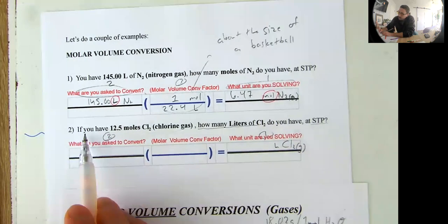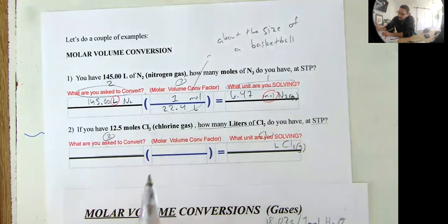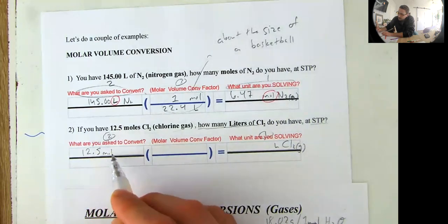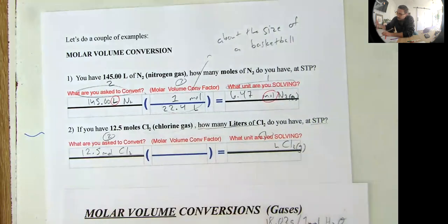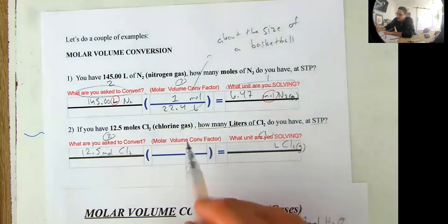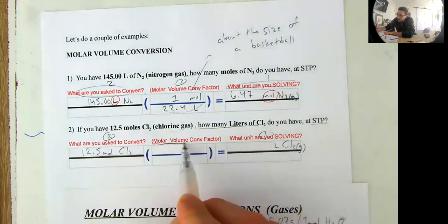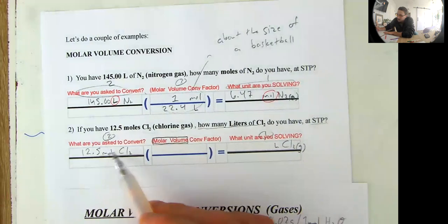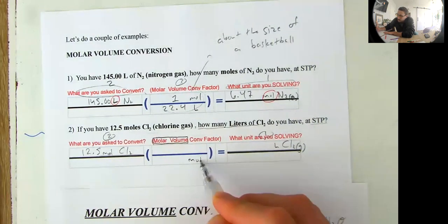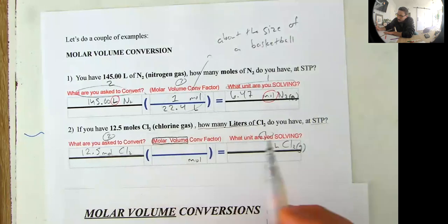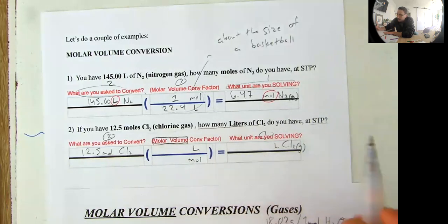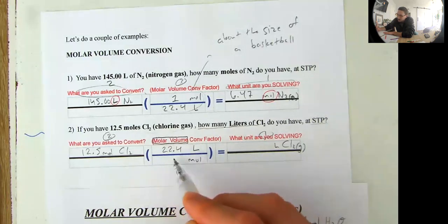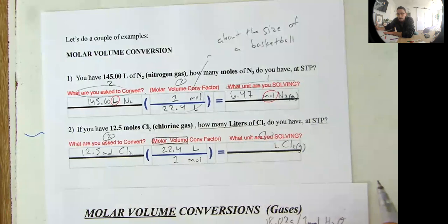Okay. So now we need to use the correct conversion factor and this conversion factor is called molar volume. Okay. We need to convert moles into liters. So the mole goes on the bottom. The mole goes on the bottom and the liter goes on the top. Okay. And now we can put the correct numbers in the correct places. So this time, the 22.4 goes on the top and the one goes on the bottom. Okay. So now we need to multiply across the numerator and divide by the denominator and we're good. 12.5 times 22.4.